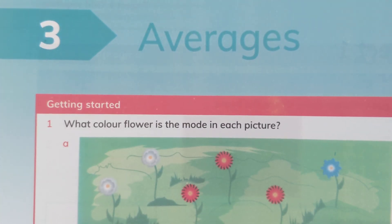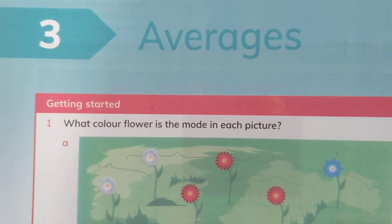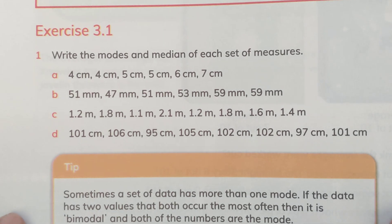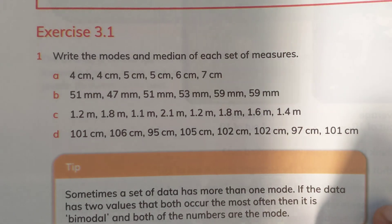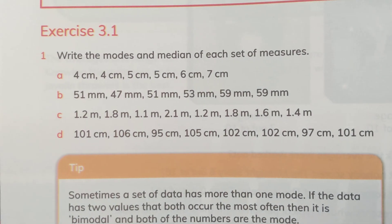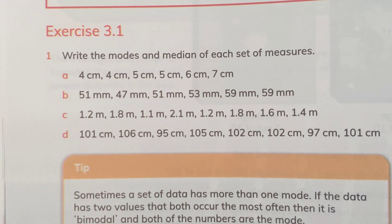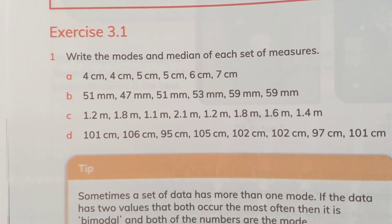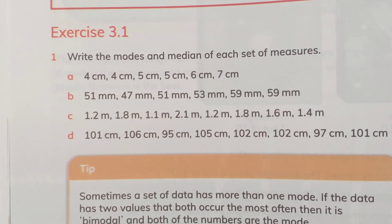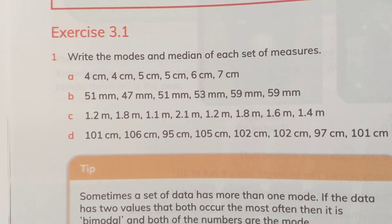We have learnt about averages in grade 5 as well, and now we are going to do a lot more questions related to it. So watch the video till the end and do not skip it. Averages basically tell us about the most common data out of a given set of data. To find the most common or middle value, we use 3 types of averages: mean, median, and mode.